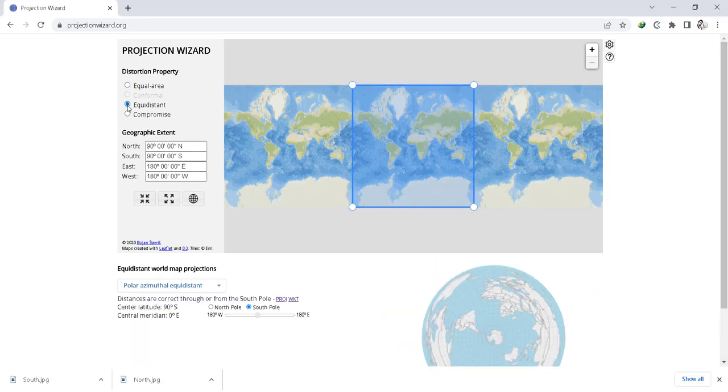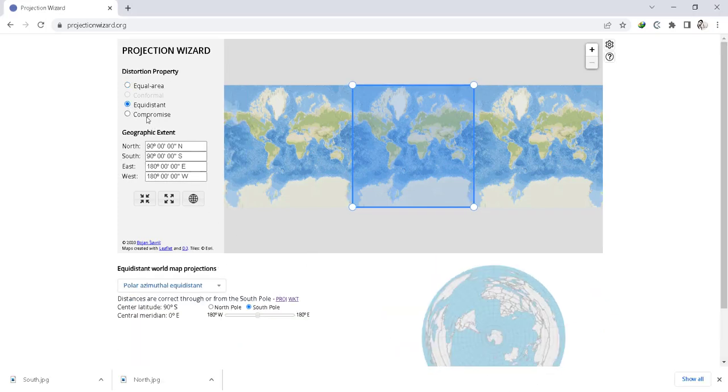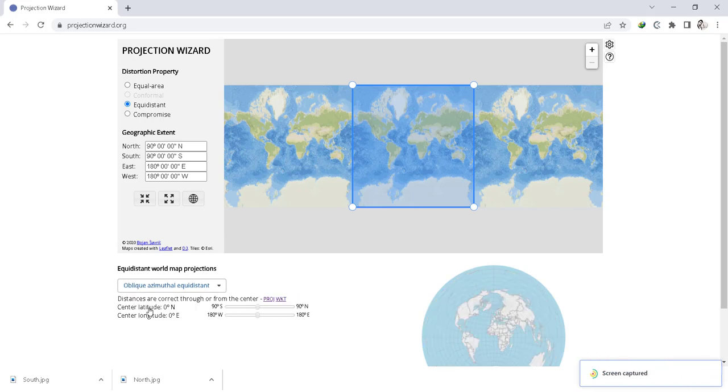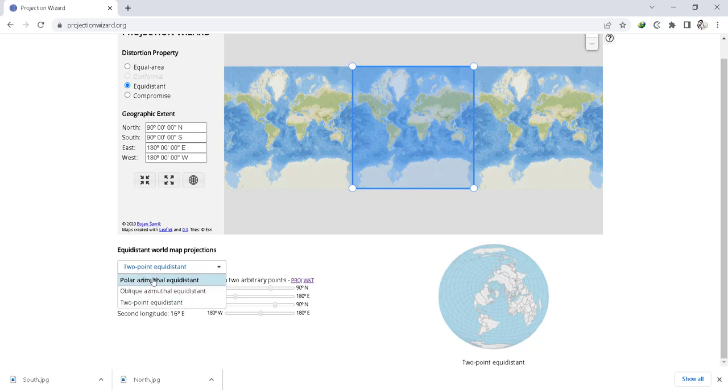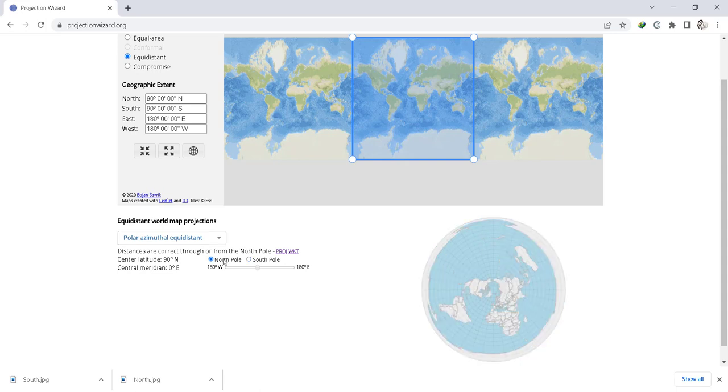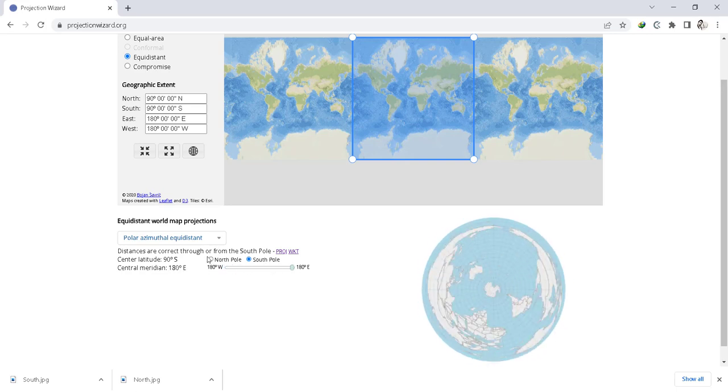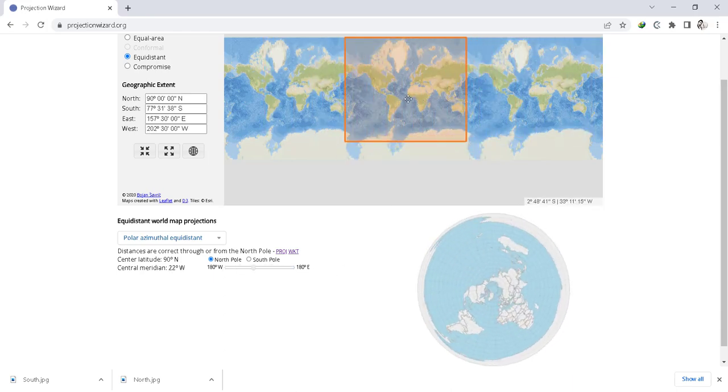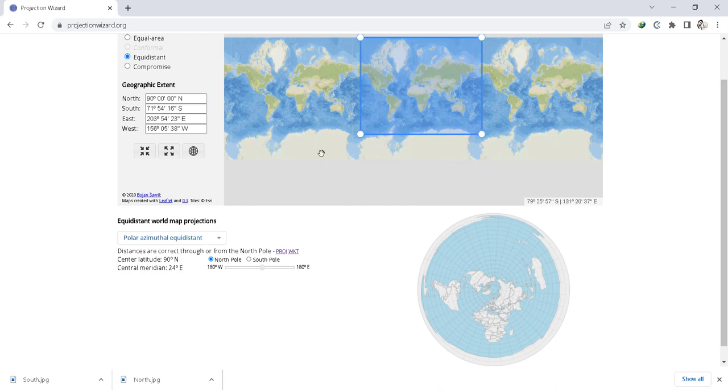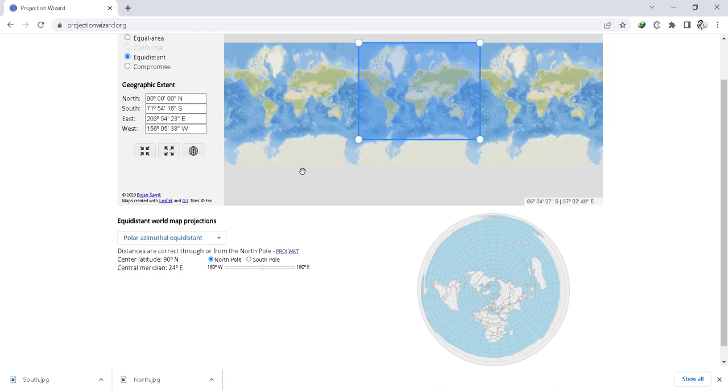For instance, if you are only interested in azimuthal polar projections, you can simply select equidistant. Here you get the polar azimuthal equidistant projections. So you can select the North Pole and the South Pole as you have already seen previously. From here you can adjust the positioning like this, otherwise you can adjust it from here as well. So in this way you can adjust the required projections.